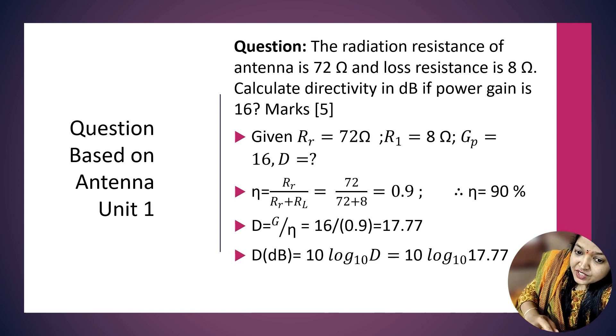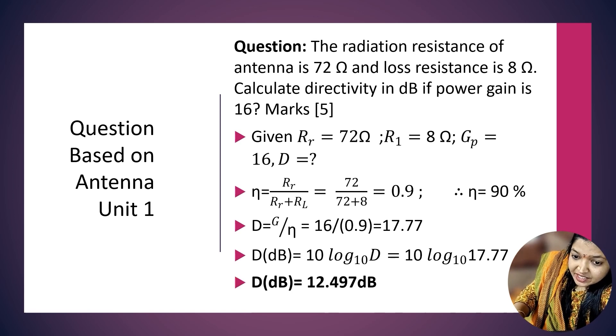The question asks for directivity in dB. To convert to dB, we use the formula: D(dB) = 10 log₁₀(D) = 10 log₁₀(17.77) = 12.497 dB. This numerical is for 5 marks.